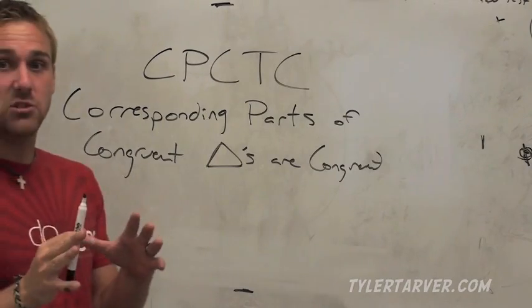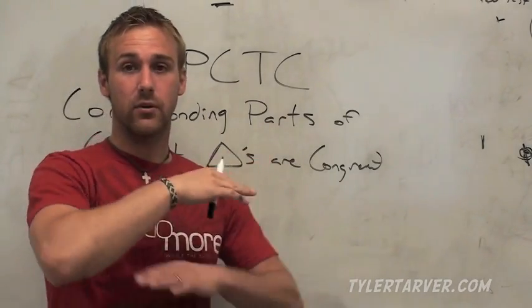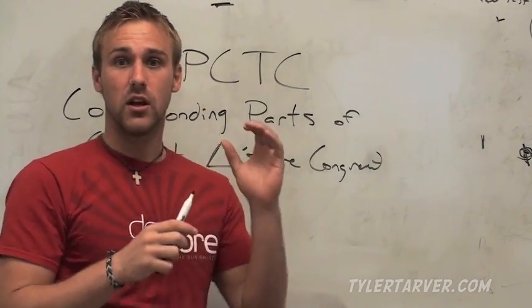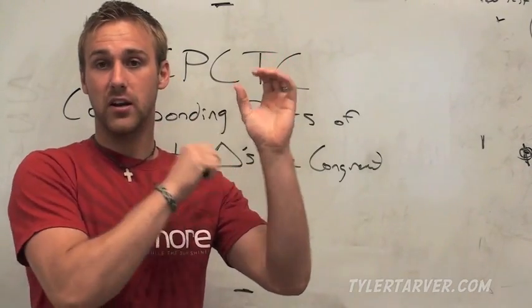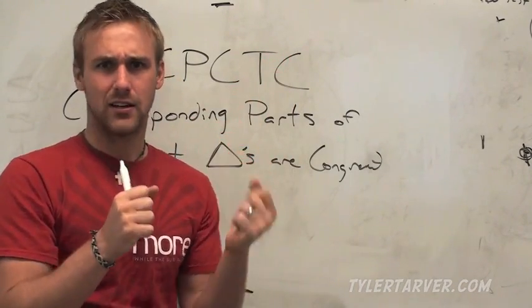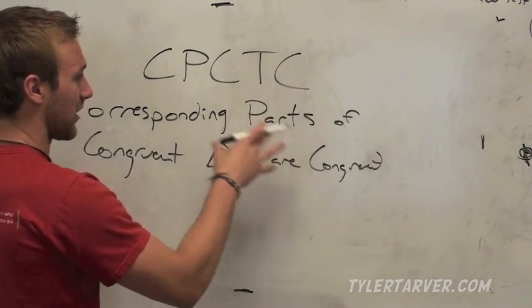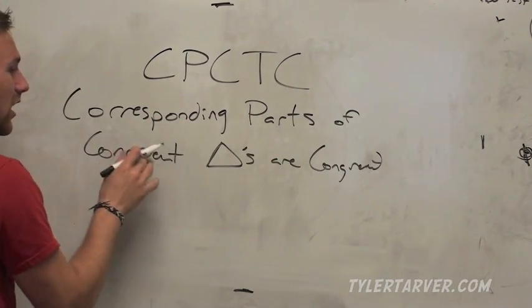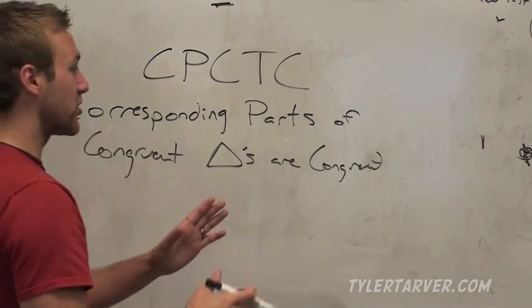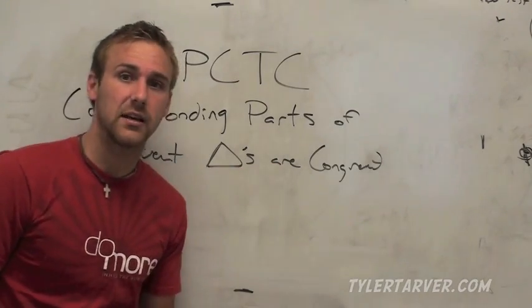Corresponding, which means in the same spot but on a different thing. We learned that back when we did parallel lines cut by transversal. It was like if they're in the same spot but in different places. Does that make sense? Same spot, parts. If the parts that are in the same spot of triangles that are the exact same measure are also going to be the exact same measure.